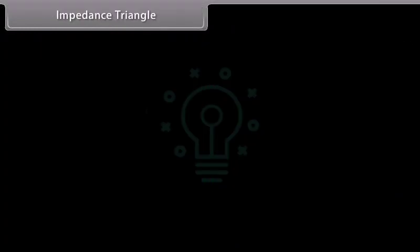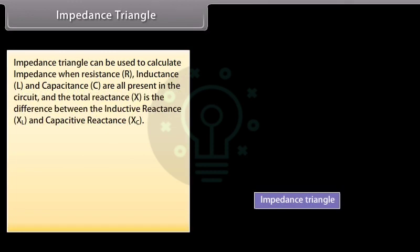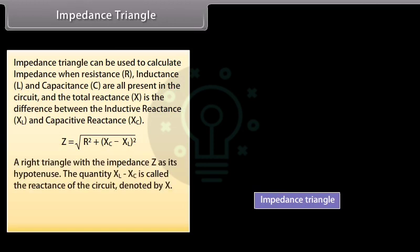Impedance triangle. The impedance triangle can be used to calculate impedance when resistance, inductance, and capacitance are all present in the circuit. The total reactance is the difference between the inductive reactance and capacitive reactance. In the right triangle, Z is the hypotenuse, and the quantity XL − XC is the reactance of the circuit, denoted by X. tan(φ) = (XC − XL) / R.